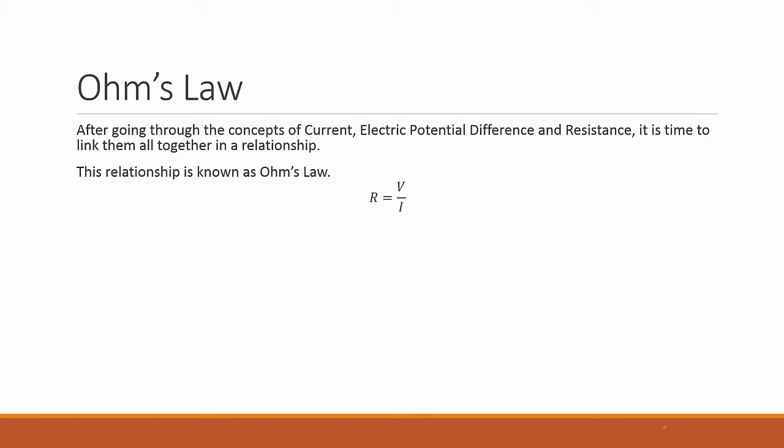This relationship is known as Ohm's Law, where R equals V over I, where R is the resistance, V is the electric potential difference across the resistance, and I is the current flow.